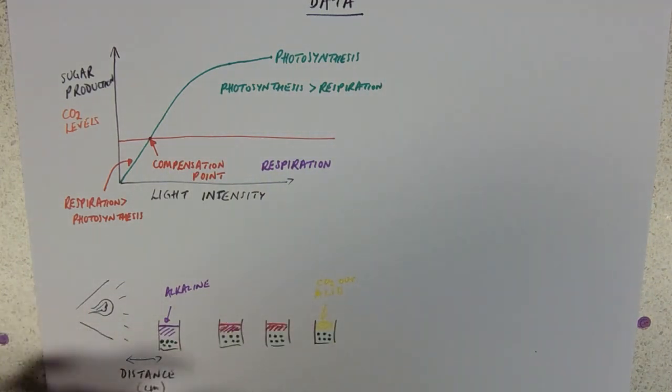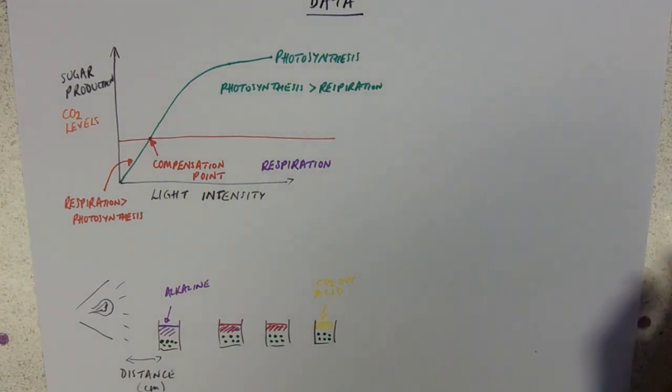And we can use that to determine compensation point, which would be the point at which the indicator does not change color, because the carbon dioxide produced and the carbon dioxide used up in photosynthesis completely balance out. So that's the sort of practical in your practical book. I was going to do a video about it. Might have to wait until next year now. So that's one set of data.